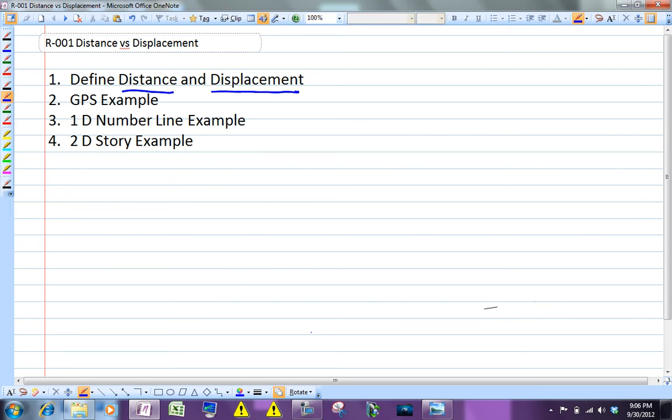First we're going to define distance and displacement. Then I want to give you a GPS example, like on your phone or a GPS in your car, that kind of highlights the difference. Then I'll give you a one-dimensional example on a number line, and then I'll give you another little story that shows you the difference in two dimensions.